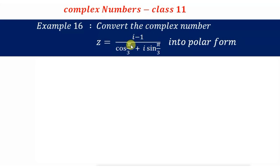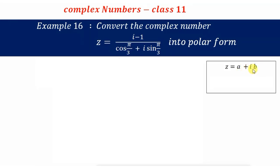To convert any complex number into polar form, the first step is to get the given complex number in standard form, that is the a + ib form. After we convert it into the standard form, then we convert it into polar form.